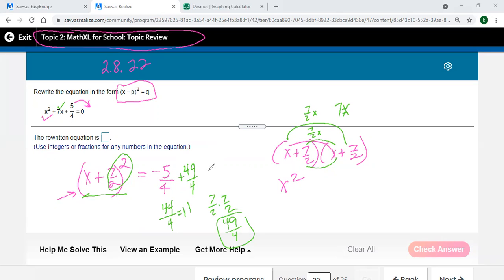And 44 fourths, that's just 11. So when we did this, this side on the right needs to be an 11, and the left side is the 7 halves. So there's our equation.